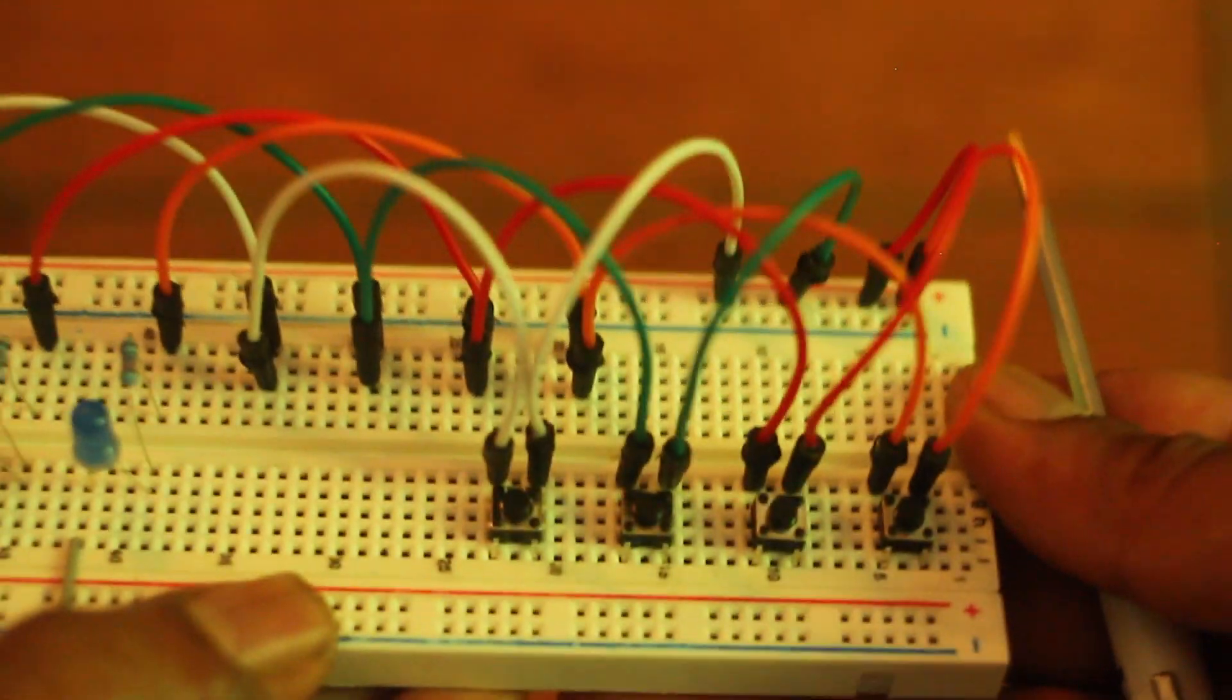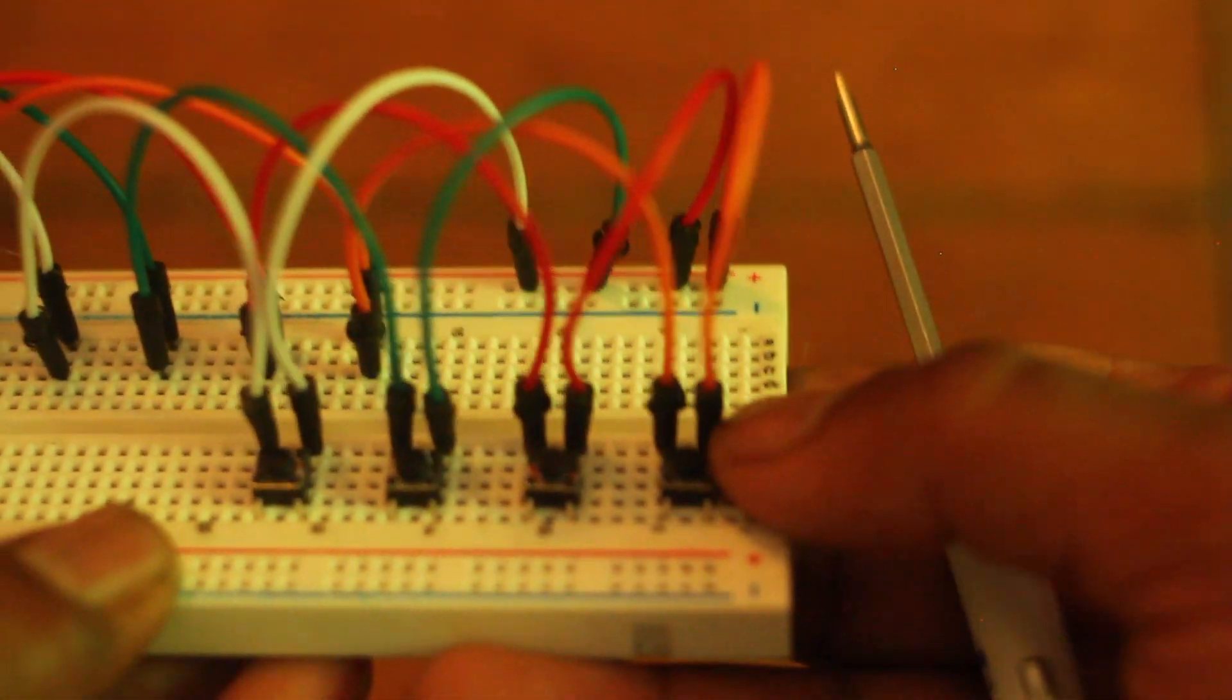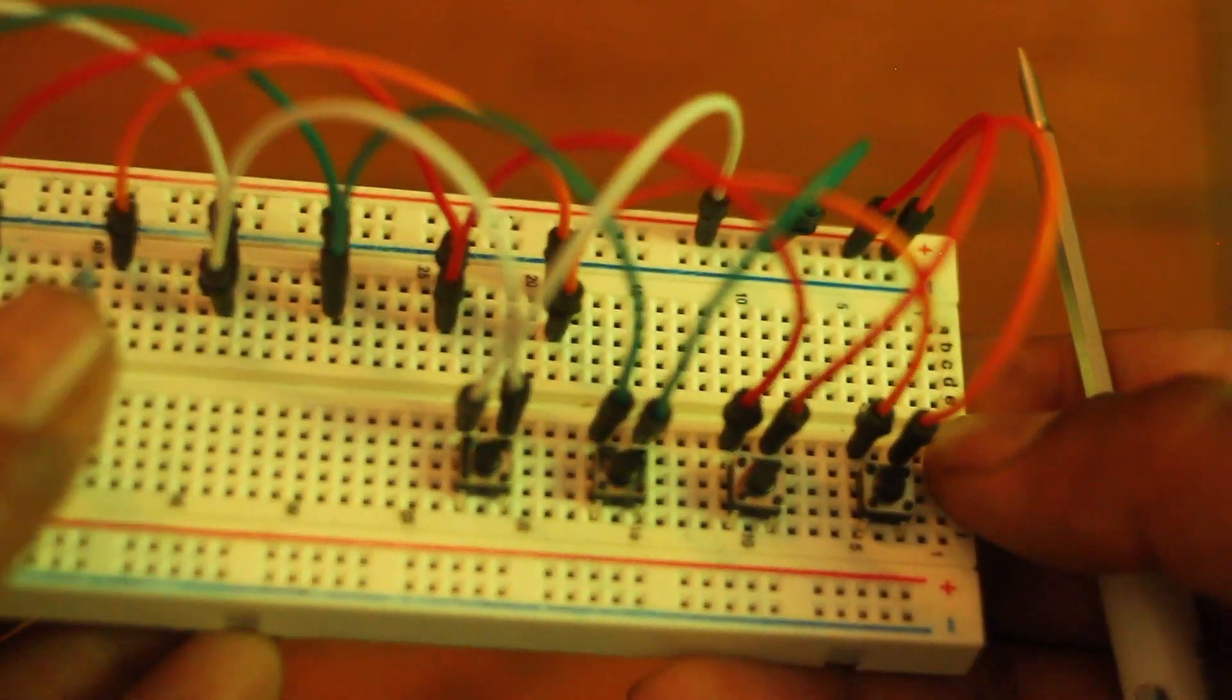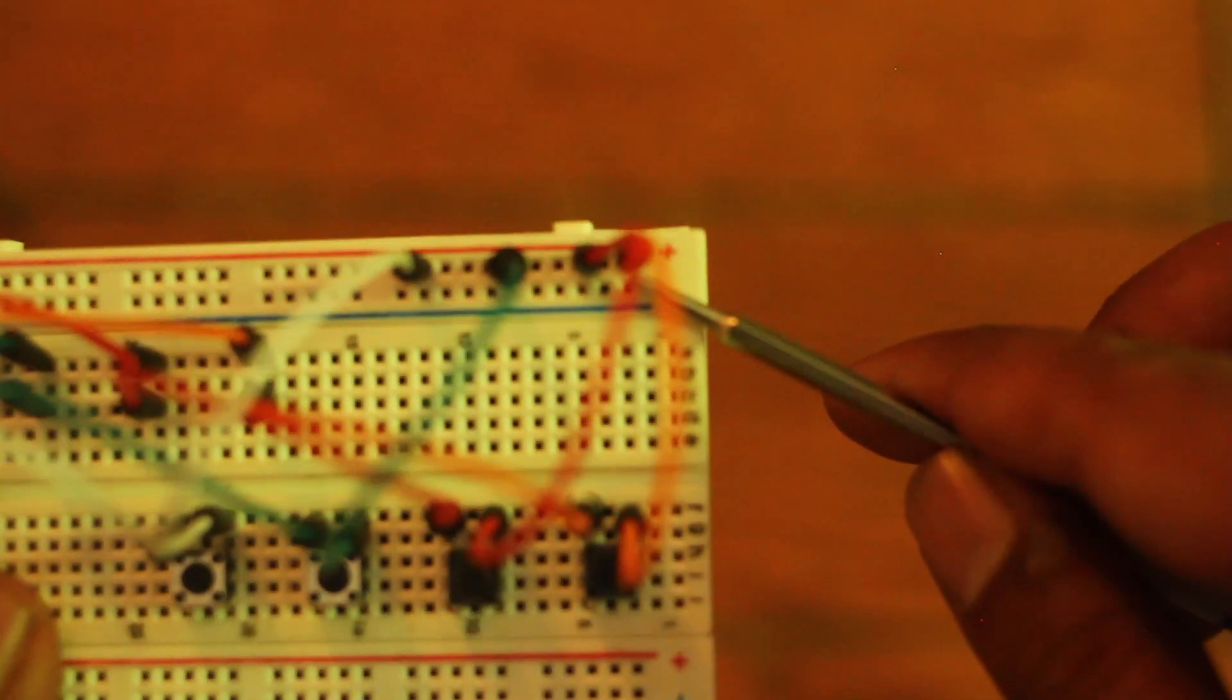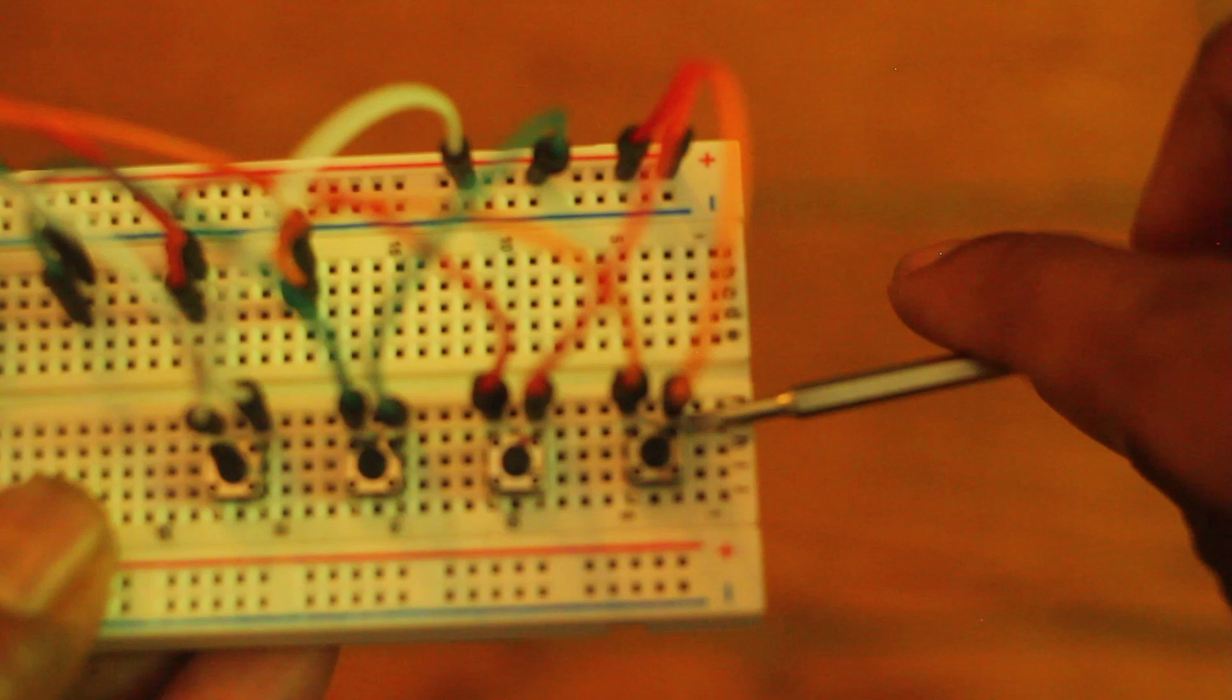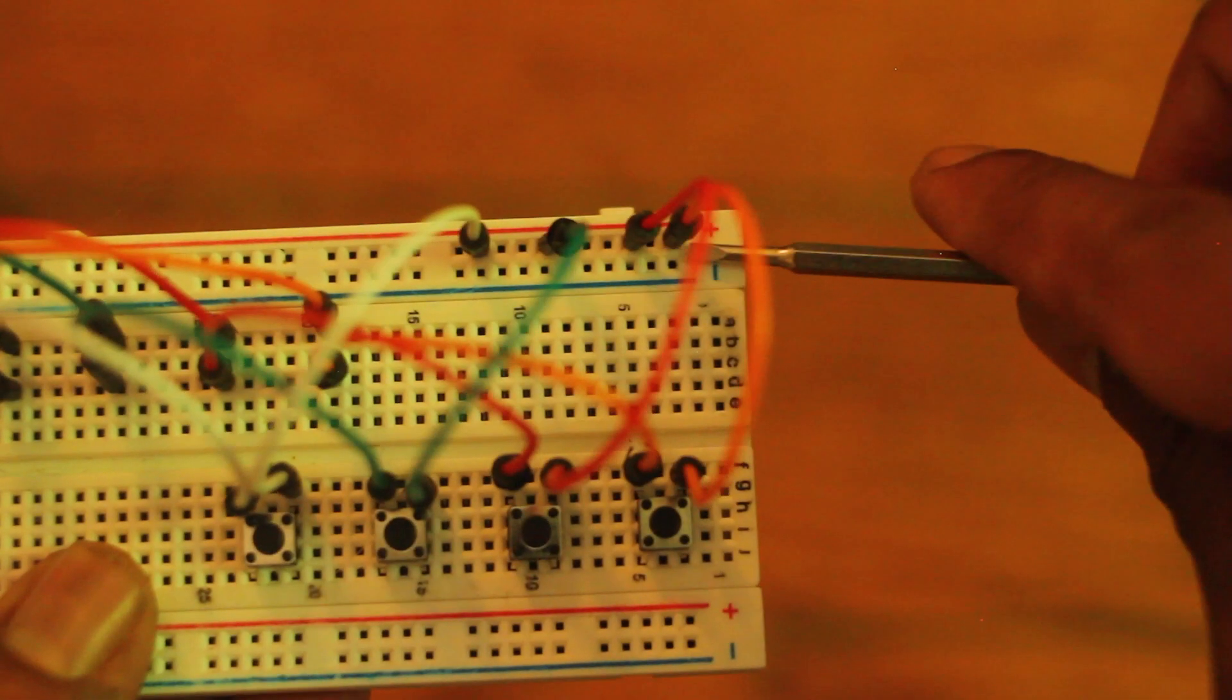I'll kind of show you now the signal flow of how this is all supposed to work. I'm going to use this orange one that's supposed to be the blue one. I didn't have any blue cable so whatever. So I got all of the buttons, each of the positive sides going to the positive rail here. That's where all those are coming from.